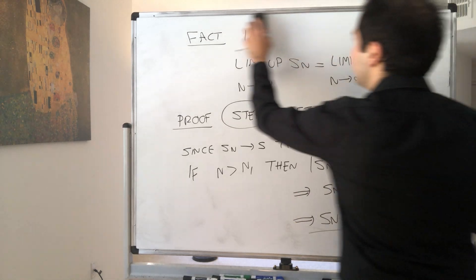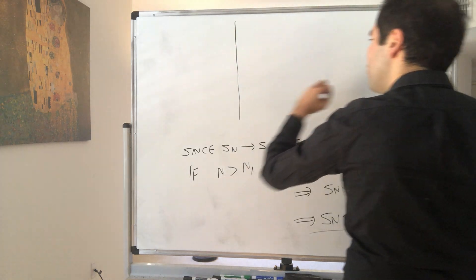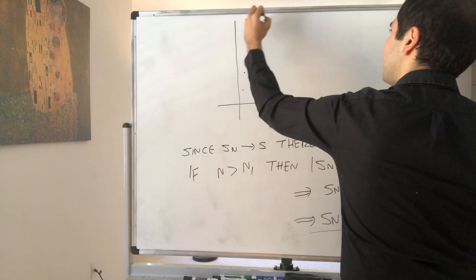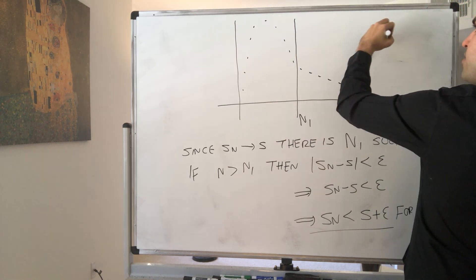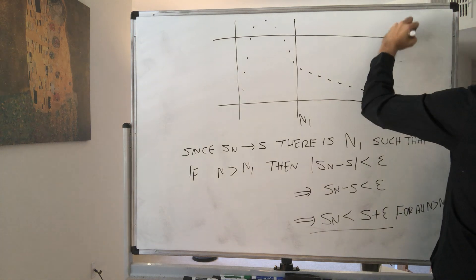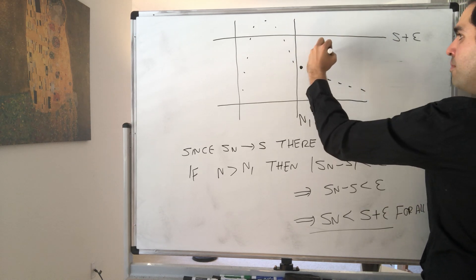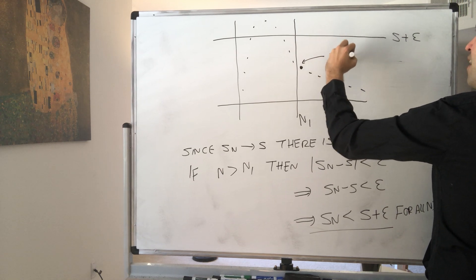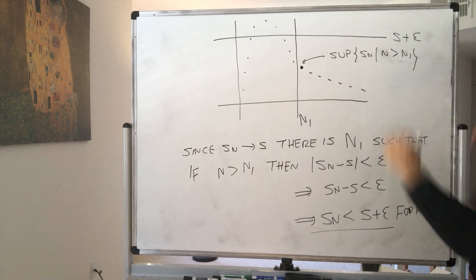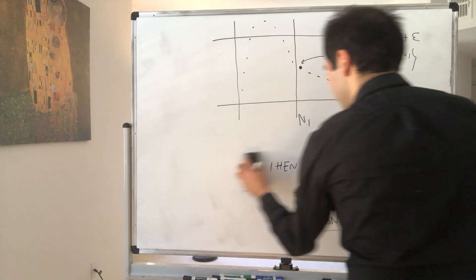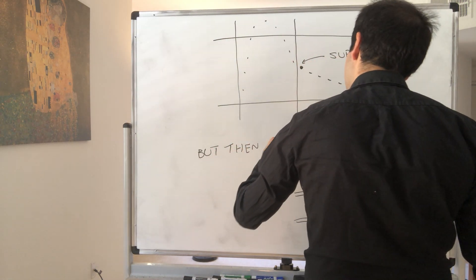What is happening here is very important. We have our sequence Sn, which might look crazy, and we're saying that after capital N1, your sequence is bounded above by S plus epsilon. But then in particular, the supremum also has to be bounded above by S plus epsilon. So the supremum of Sn where n is bigger than N1 also has to be less than or equal to S plus epsilon. The supremum of Sn is less than or equal to S plus epsilon.